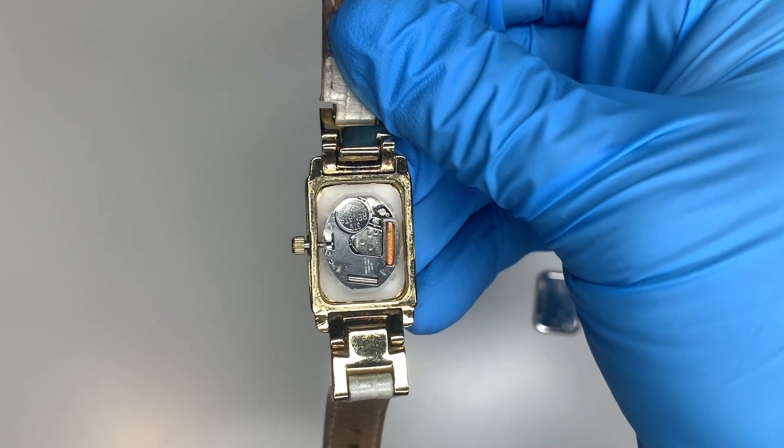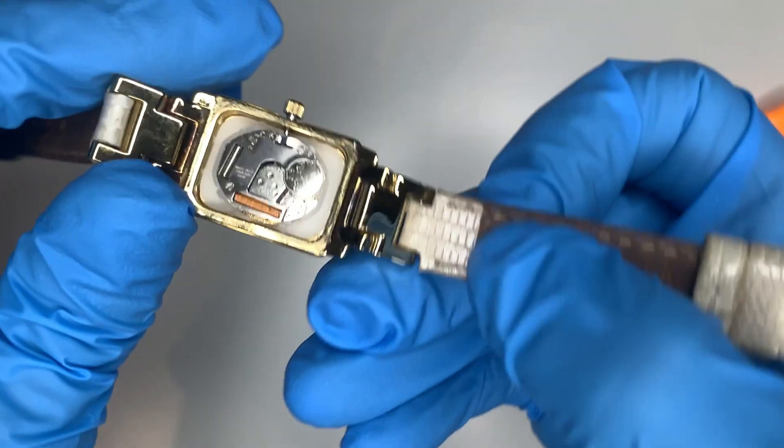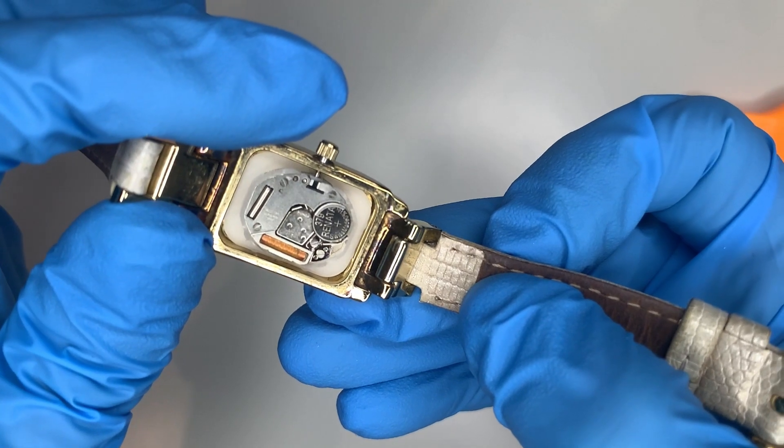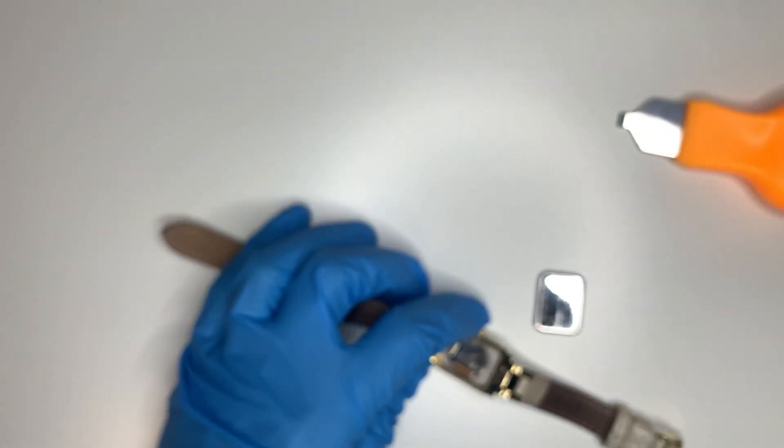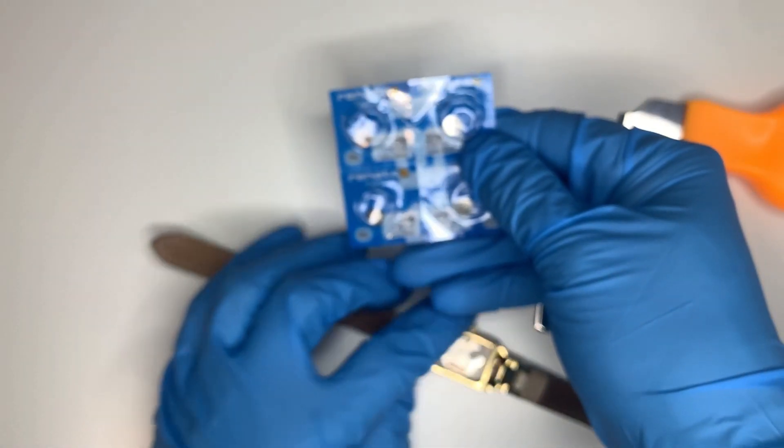Now we need to check the battery. You might be able to see the number on there: 379. That's the size of the watch battery. I've got some 379s here.